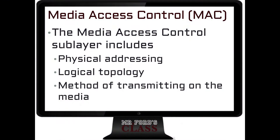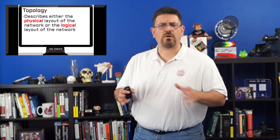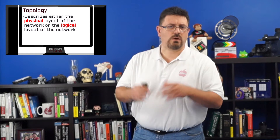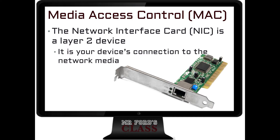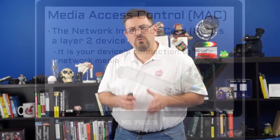The MAC area, or media access control sub-layer, includes physical addressing, logical topologies, and the method of transmitting on the media. The physical address is burnt into what we know as a network interface card, a NIC, which is also a layer 2 device. In your NIC, you have this physical address assigned by the manufacturer. This MAC address is like the social security number of that device — the unique physical address of that specific computer or networking device.